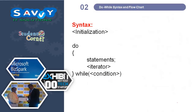Now moving to the next one, that is do-while. First is initialization, next are the statements, then the iterator, followed by the condition. At the end we also put a semicolon. While is the entry control loop. Do-while is the exit control loop, because we are checking the condition at the end. That is why in do-while the statements will be executed at least once.